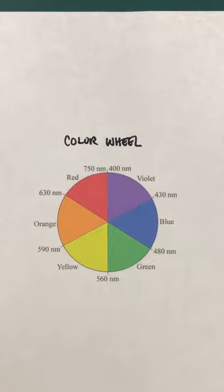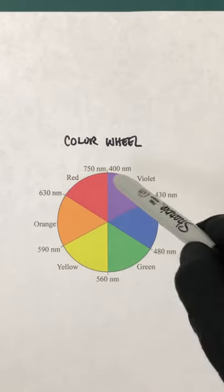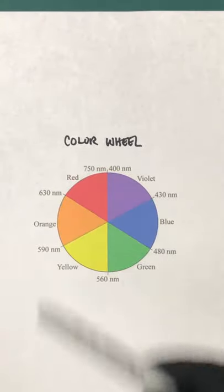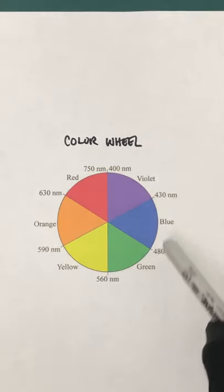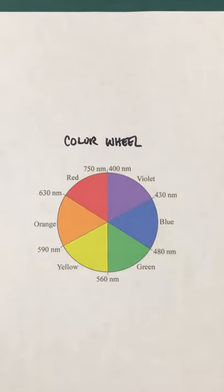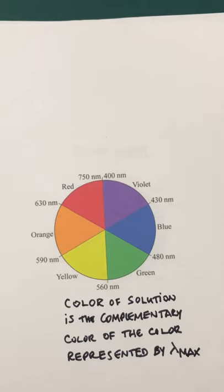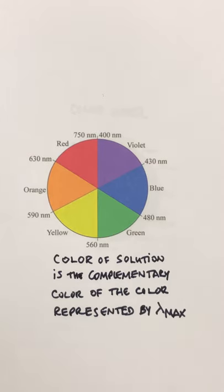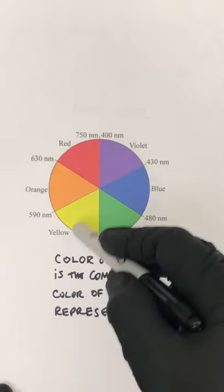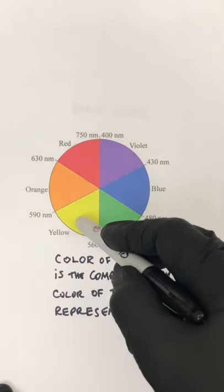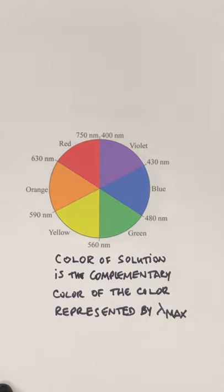Before we go on to doing our spectrum, let's think about this for a moment. This is a color wheel. You may be familiar with these from your elementary school art class. It shows the colors pretty much of the rainbow and puts on the outside the corresponding wavelength ranges for each one. For example, yellow is between 560-590 nanometers. Blue is between 430-480 nanometers. Now the important principle here is the following: the color of the solution is the complementary color of the color represented by lambda max.